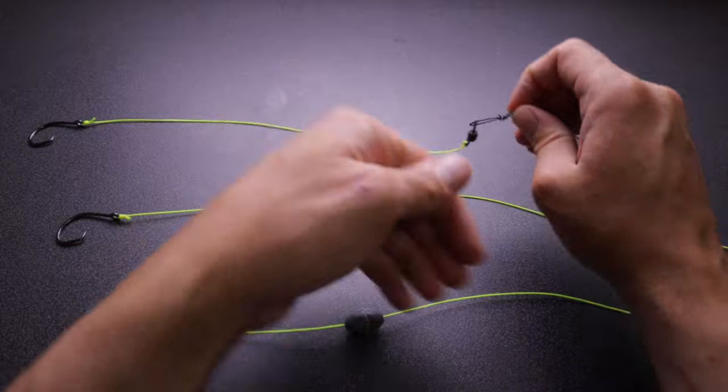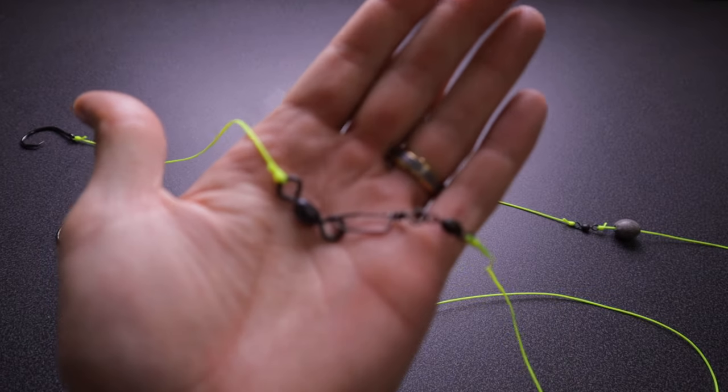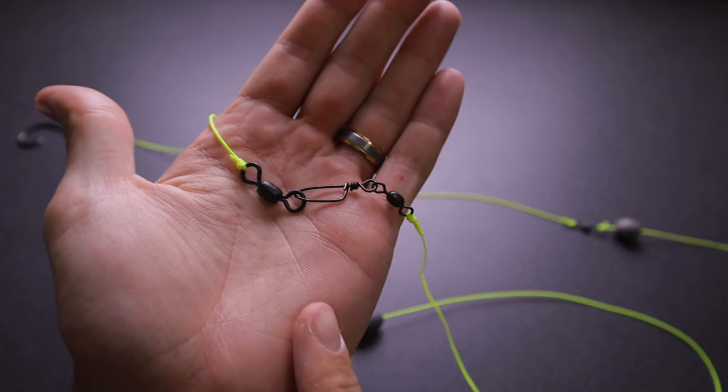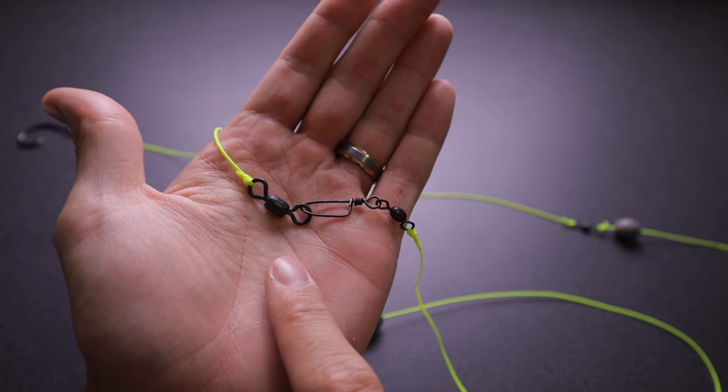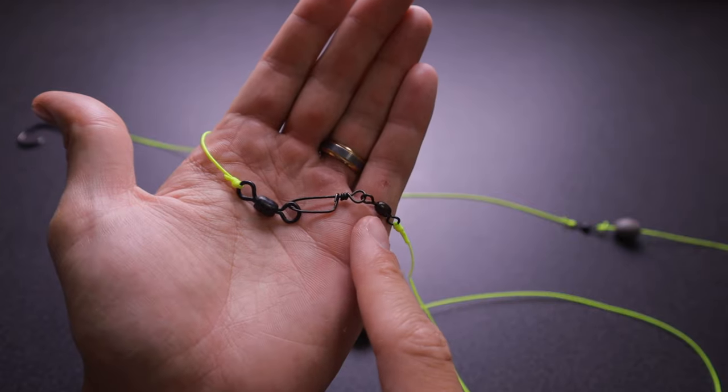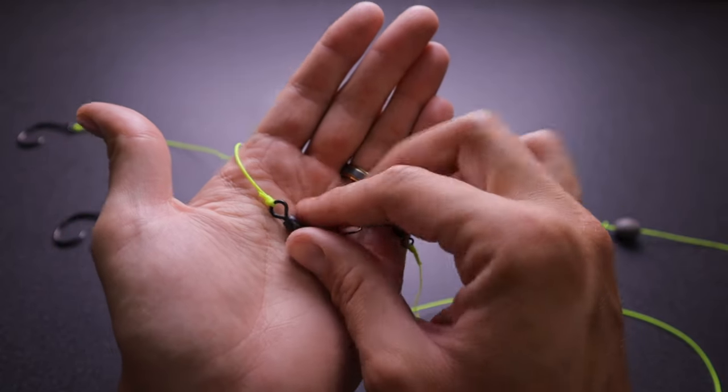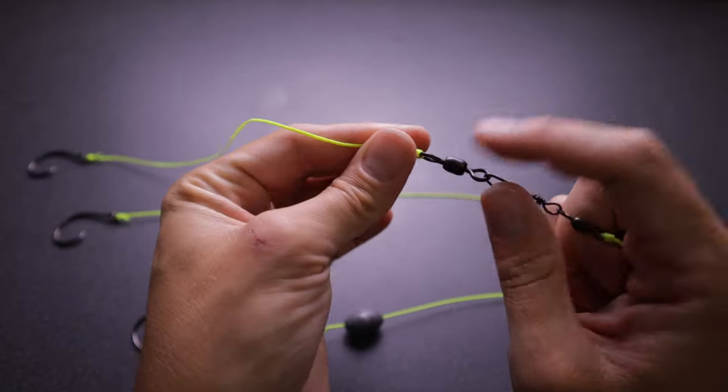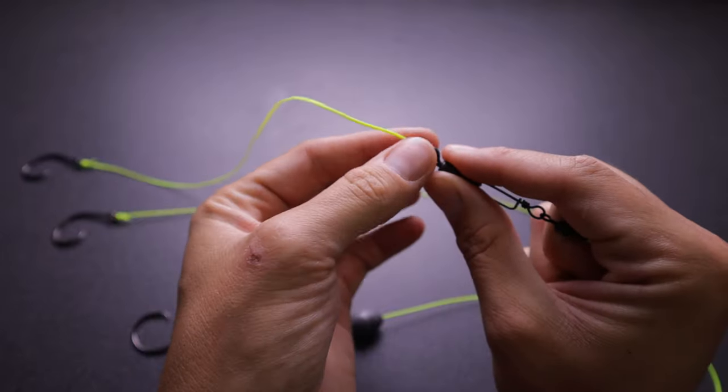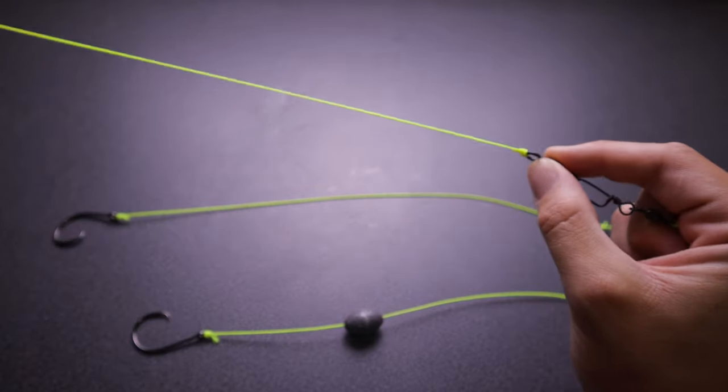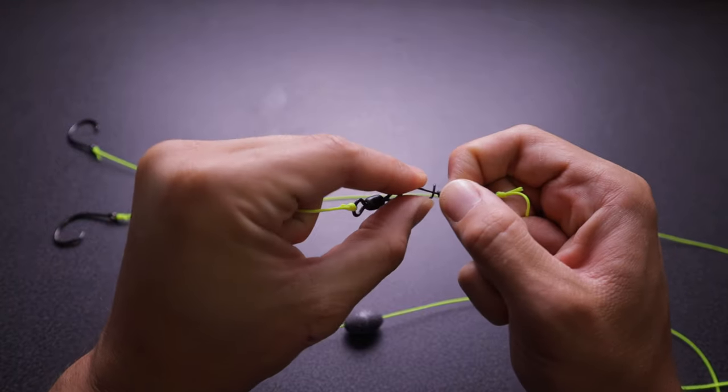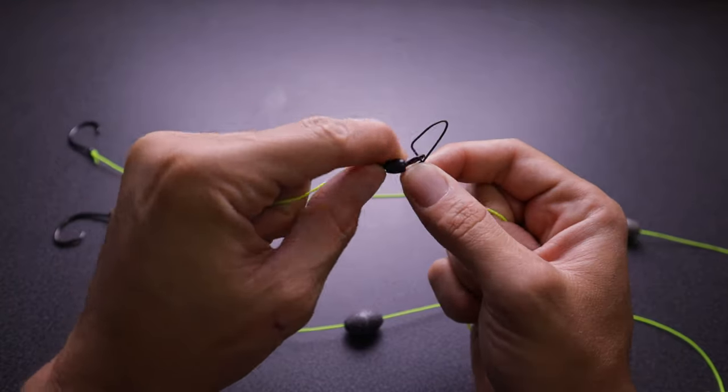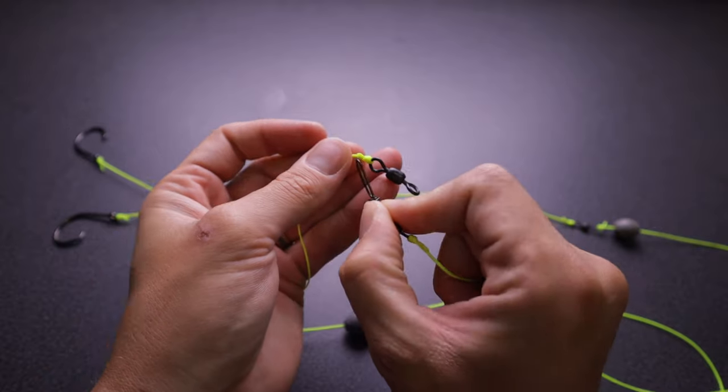What we do is we'll unsnap this swivel, we'll cut off right here, put the swivel in our pocket or in a little cup holder so we can use these in the future. Then tie on another rig, or snap on another rig in this case, and we're back to fishing. Super easy, super quick.